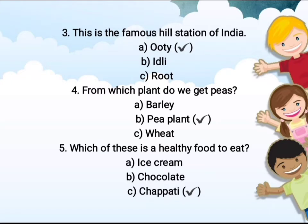Fourth question: from which plant do we get peas? The options are barley, pea plant, and wheat. The correct answer is pea plant. We get peas from the pea plant.